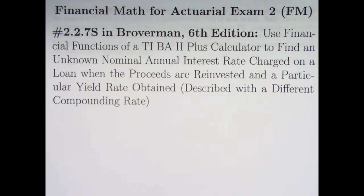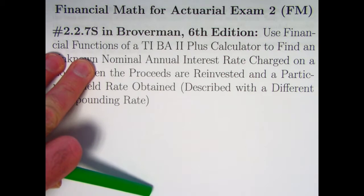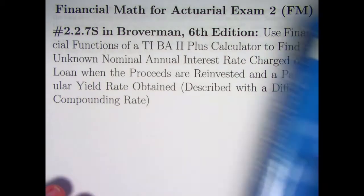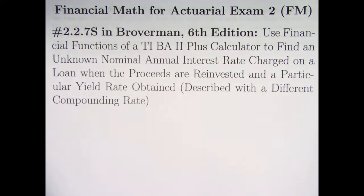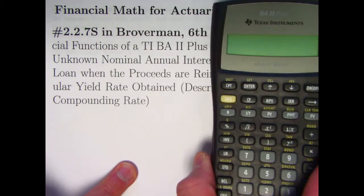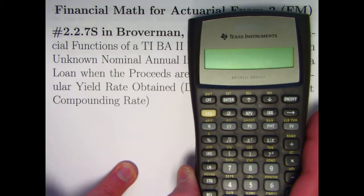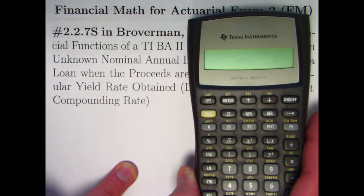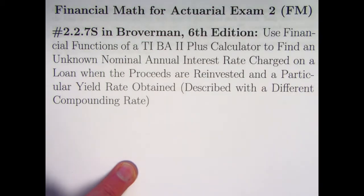You'll have to bear with me as I seem to have a cold today, but this is an important video to get done. We're going to be looking at problem 2.2.7, an old actuarial exam problem from 'Mathematics of Investment and Credit,' the sixth edition by Samuel Broverman. It's a long description but important, especially the use of the BA II Plus financial functions to solve for an unknown interest rate — otherwise you'd have to guess and test.